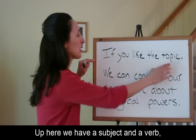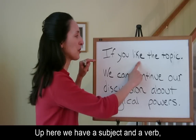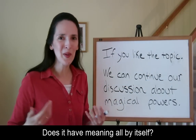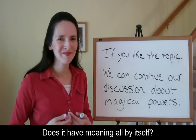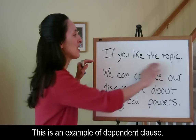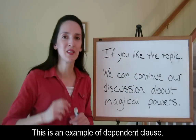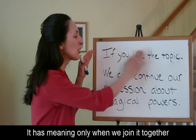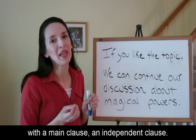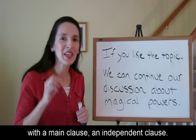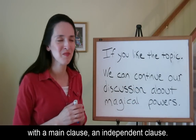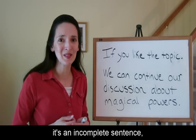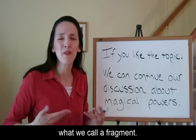Up here, we have a subject and a verb, but can this stand alone? Does it have meaning all by itself? No. This is an example of a dependent clause. It has meaning only when we join it together with a main clause, an independent clause. If we leave it all by itself, it's an incomplete sentence — what we call a fragment.